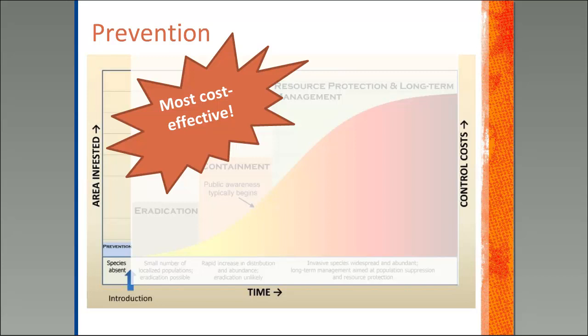The first piece is prevention. If we can prevent invasive species from getting here in the first place, that's going to be our most cost-effective option — obviously no area is infested and there are no control costs at that point, although there are certainly costs associated with prevention efforts. There are links included in the online resources for invasive plant laws and state laws and regulations if you want to dive deeper into that.